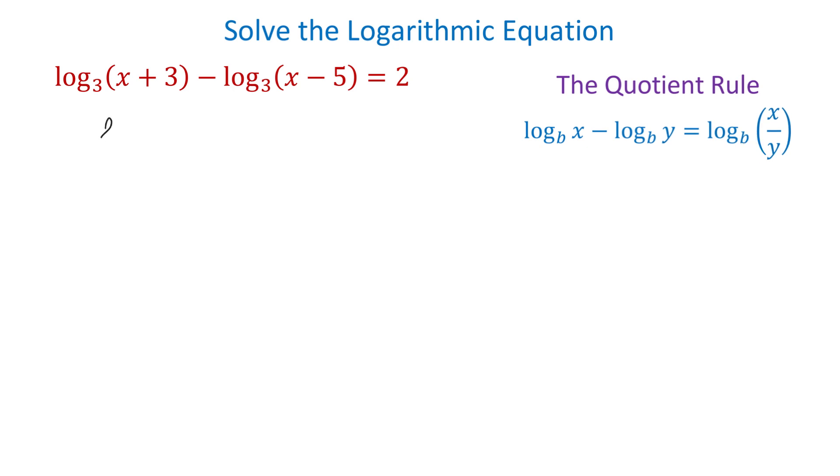Then, according to this rule, on the left side, we will have log base 3 of x plus 3 over x minus 5, and on the right side, we will have 2.